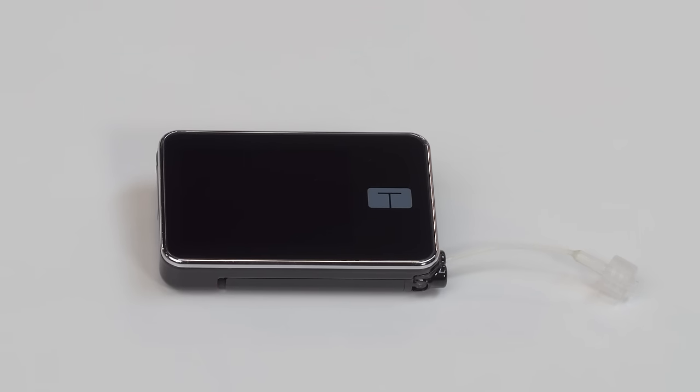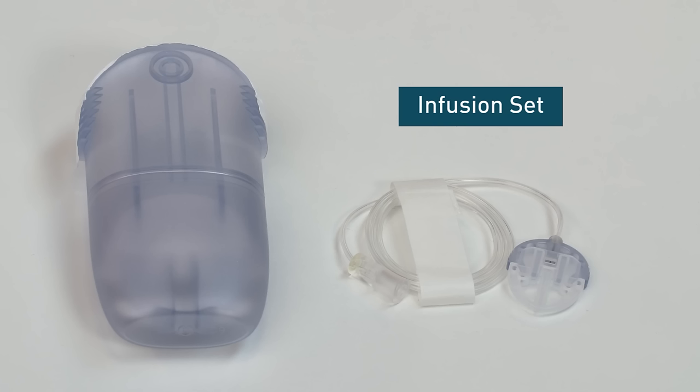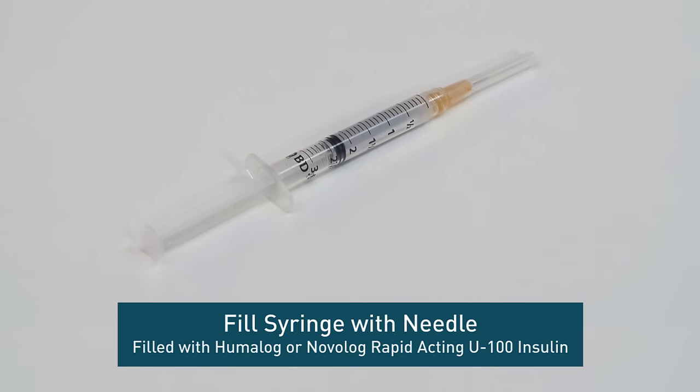In this video, we will be using the following items: a new unused cartridge, a new unused infusion set, a cartridge removal tool or coin, and a fill syringe with needle filled with either Humalog or Novolog Rapid Acting U100 insulin.